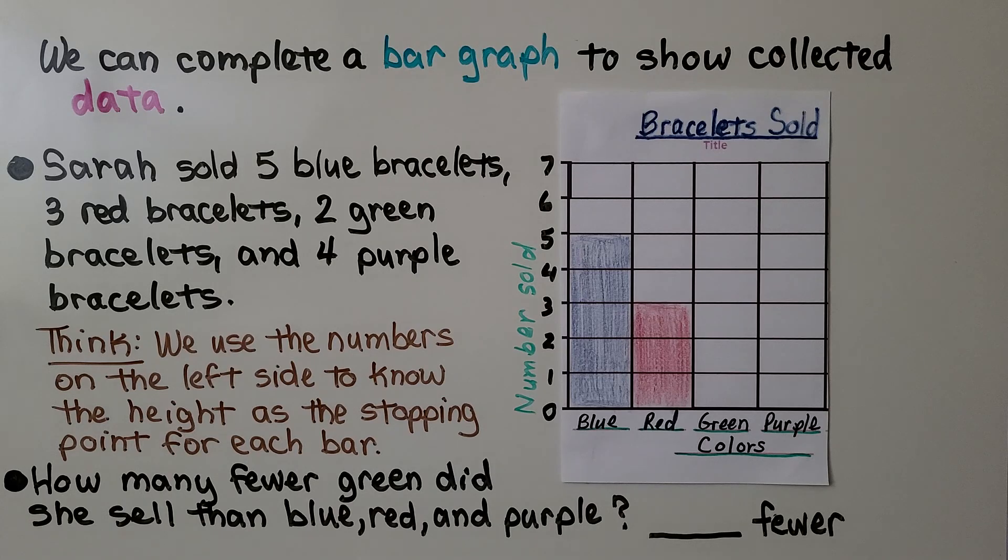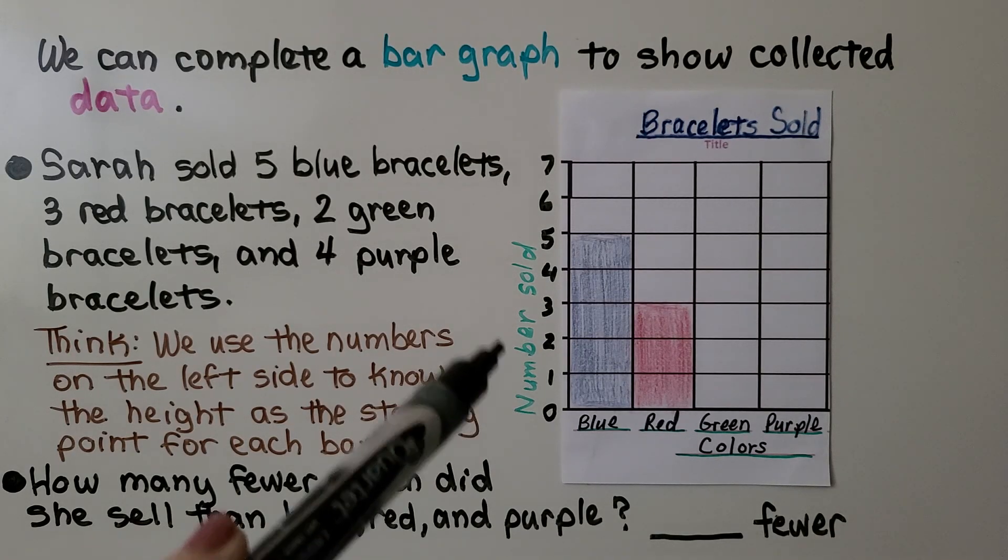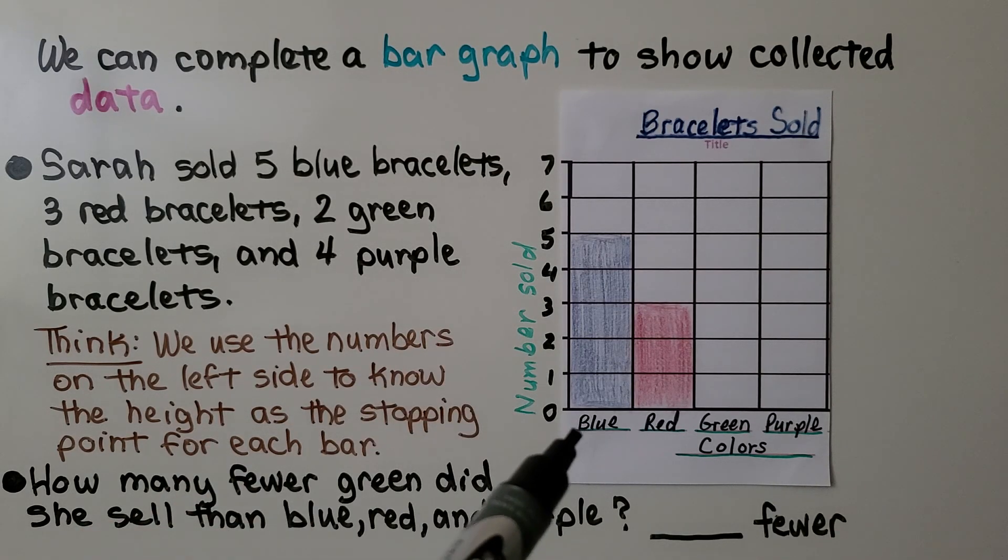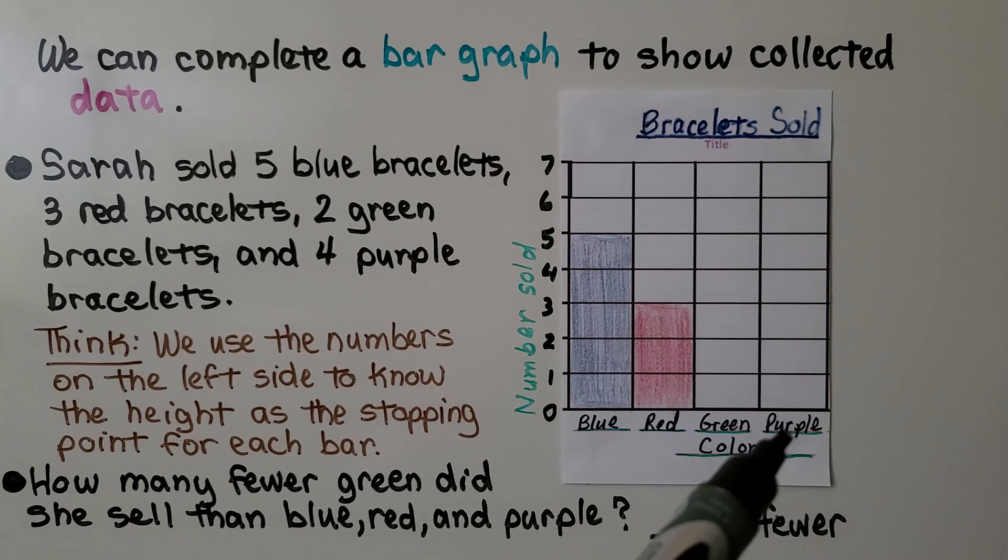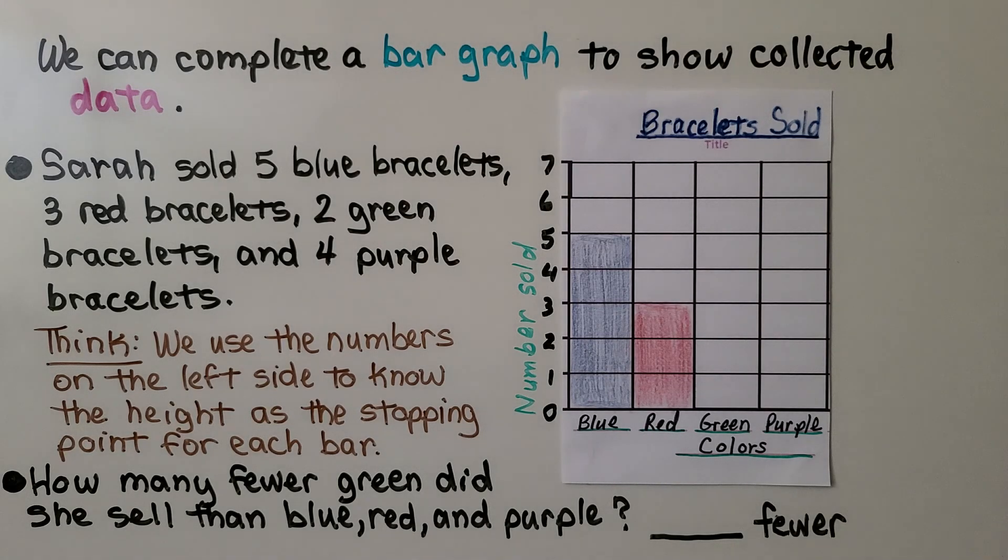We can complete a bar graph to show collected data. Let's look at the bar graph first. It says bracelets sold. Here's the number that were sold. And here's the colors, blue, red, green, purple. It's telling us that Sarah sold five blue bracelets, three red bracelets, two green bracelets, and four purple bracelets. We use the numbers on the left side to know the height as the stopping point for each bar.